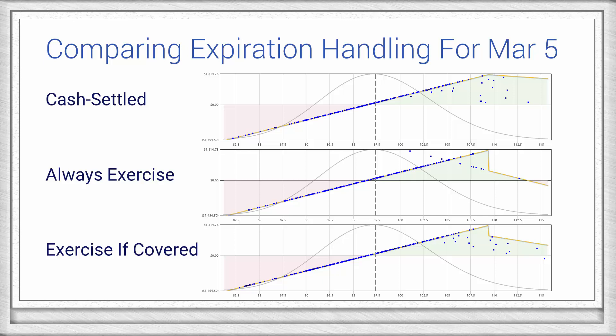In the Cash Settle chart, one thing that stands out is that there are multiple price paths that end right around the 108 terminal price and show different returns. This is because they pass through the February 19 milestone at different prices. In the Always Exercise chart, you'll notice the X pattern, which is because the book leaves February 19 either long 100 shares or short 100 shares, depending on the price.